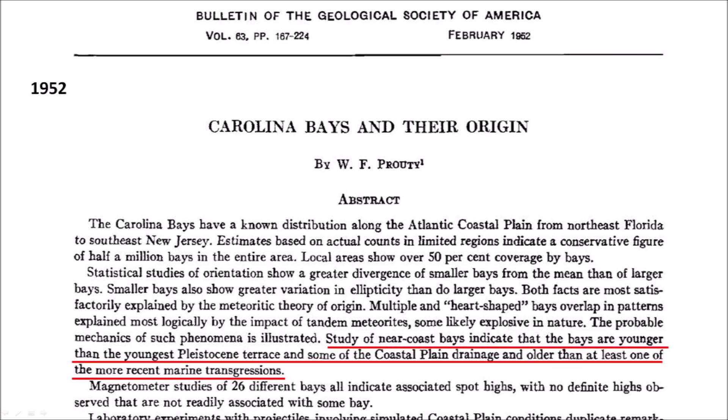A paper by Professor Prouty, published in 1952, tried to explain the mechanism by which overlapping Carolina Bays formed. Prouty also estimated the time when the Carolina Bays formed. He wrote: study of the near-coast bays indicates that the bays are younger than the youngest Pleistocene terraces and some of the coastal plain drainage, and older than at least one of the more recent marine transgressions.